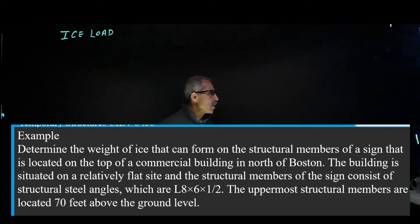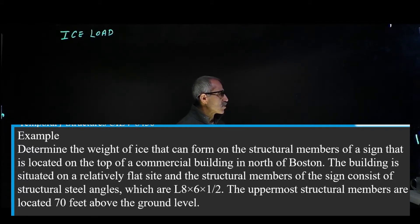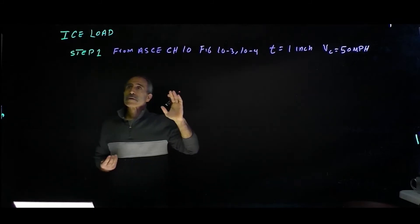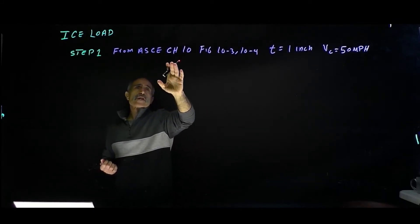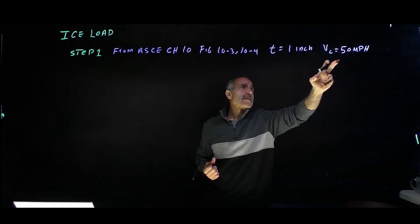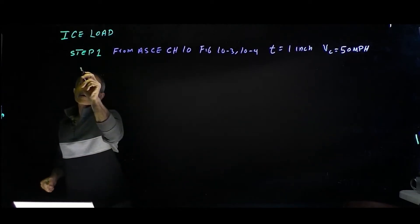The example says: find the weight of ice that can form on a structural member of a sign located on top of a commercial building in North Boston. The building is on a relatively flat site. The structural member consists of a structural steel angle L8×6×1½ inch, and the uppermost structural member is located about 70 feet above the ground. Step one: from ASCE Chapter 10, Figure 10.3, T equals 1 inch for the Boston area, and the wind velocity at that time is 50 miles per hour.